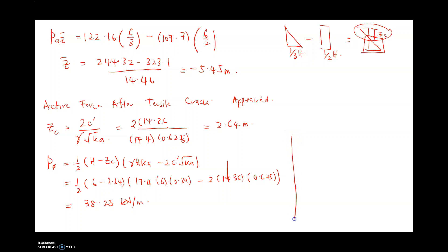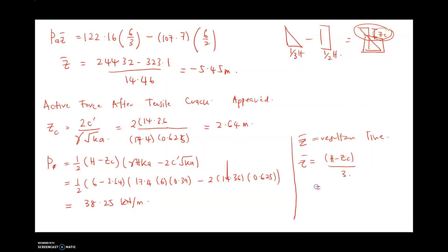The last step is to determine z-bar, the resultant line of action for the active force after the tensile crack appears. We still use one-third of the effective height, but our h is now affected by the crack. So z-bar equals (H − 2·zc) / 3 = (6 − 2 × 2.64) / 3 = 4 / 3, giving z-bar equal to 1.12 meters.